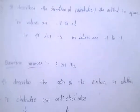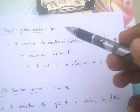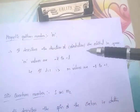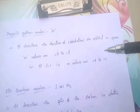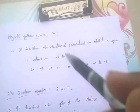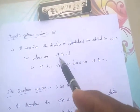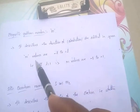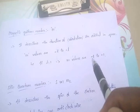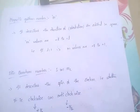Next, Magnetic Quantum Number. It is denoted by small m. This magnetic quantum number describes the direction or orientation of the orbital. The m values range from minus l to plus l, where l is the Azimuthal quantum number. For example, if l=1, the m values are minus 1 to plus 1.